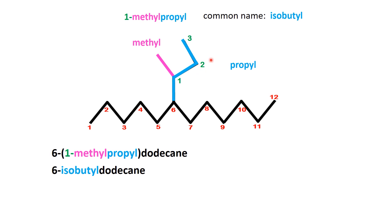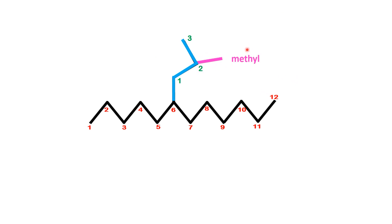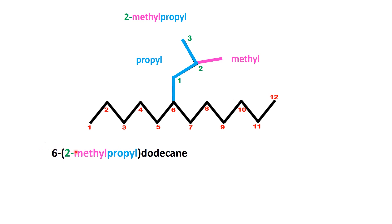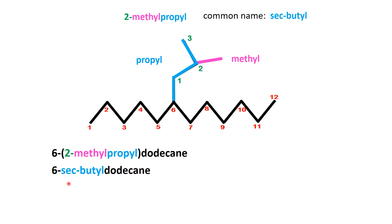But what happens if we add a methyl group to the second carbon of the propyl chain instead? First, identify the longest chain within the substituent, which is still the propyl chain. Number the carbons in the propyl chain, starting with the carbon directly attached to the main chain as carbon 1. In this case, the methyl group is attached to the second carbon of the propyl chain. This structure is named 2-methylpropyl in systematic nomenclature. The full IUPAC name of the compound becomes 6-(2-methylpropyl)dodecane. In common nomenclature, the 2-methylpropyl group is more commonly referred to as the sec-butyl group, which reflects its branched structure derived from butane. Using this naming approach, the compound would be called 6-sec-butyldodecane.